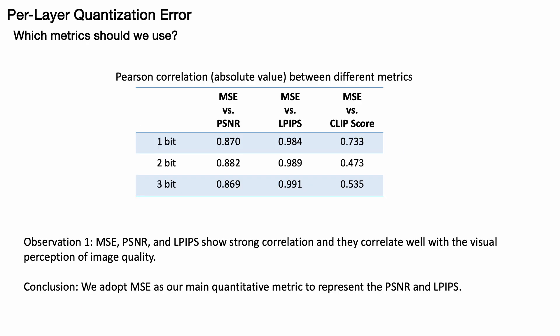We have measured the correlation between MSE and other metrics such as PSNR, LPIPs, and clip score. Our findings indicate that MSE, PSNR, and LPIPs exhibit a strong correlation and align closely with the visual perception of image quality. Therefore, we can rely solely on MSE as our quantitative metric to represent both PSNR and LPIPs.